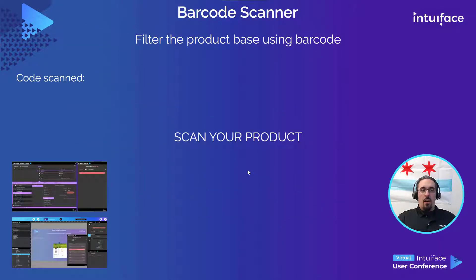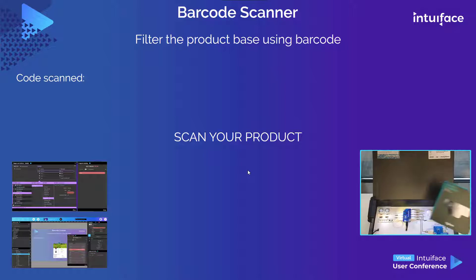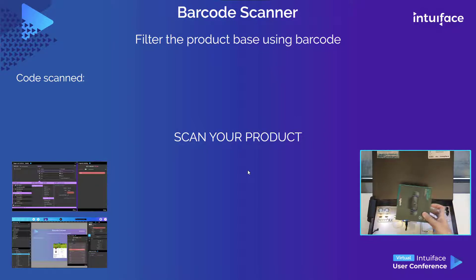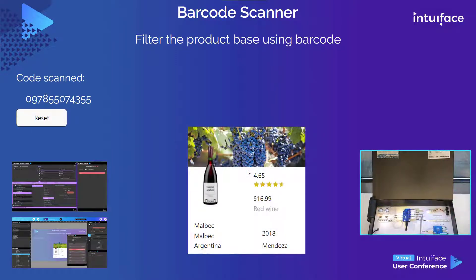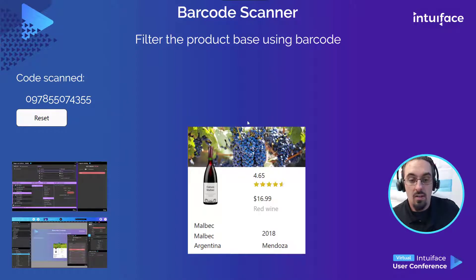Let's start with our barcode scanner. First scenario: you have a very simple kiosk — scan your product to get some information about it. Let's jump to the code and I will reuse my fabulous Malbec bottle. If you attended the previous session you know what I'm talking about. I scan the code here — there we go — and back on our screen you can see a code was scanned and we get some information about this bottle of wine.